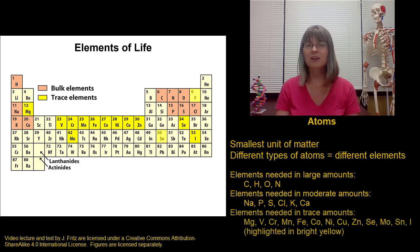Other elements we need only in very small or trace amounts. The rest of the elements that we need in trace amounts are indicated here in the bright yellow colors. These are the things that we often think of as the minerals in our diet, things like zinc and magnesium that you would find in a multivitamin.